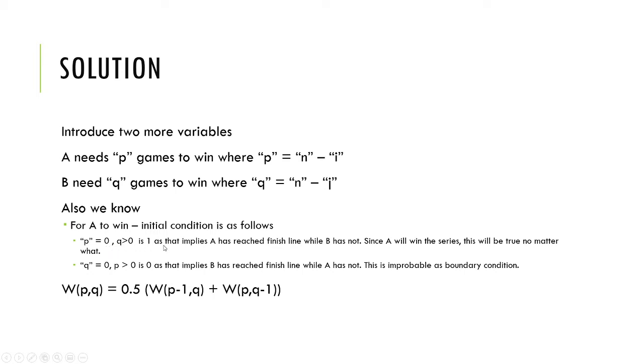We know that this probability is 1. Run through this in your head a couple times till you get it—that p equals 0 and q greater than 0 is a certain event. It's always 1 because we want A to win the game.